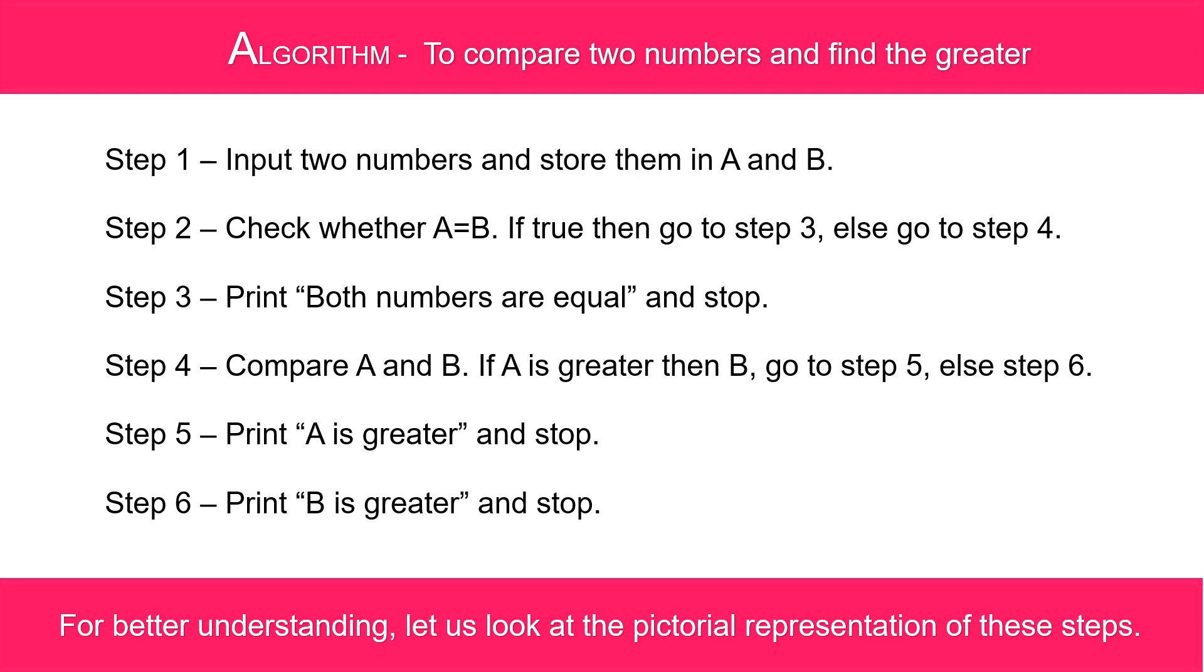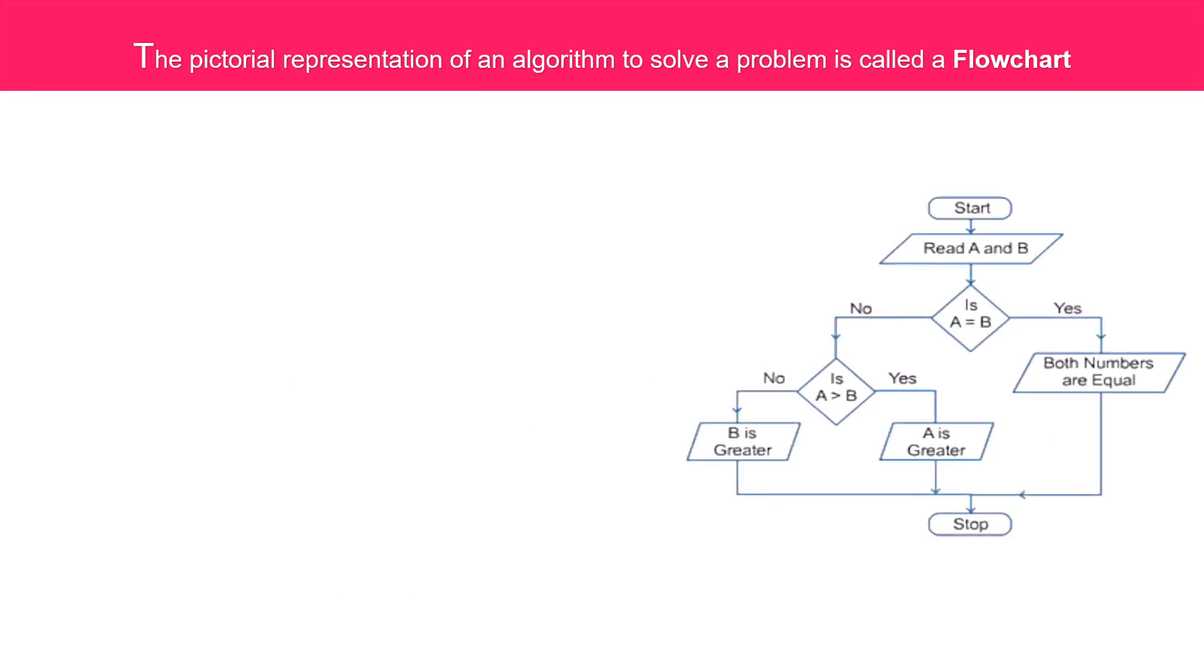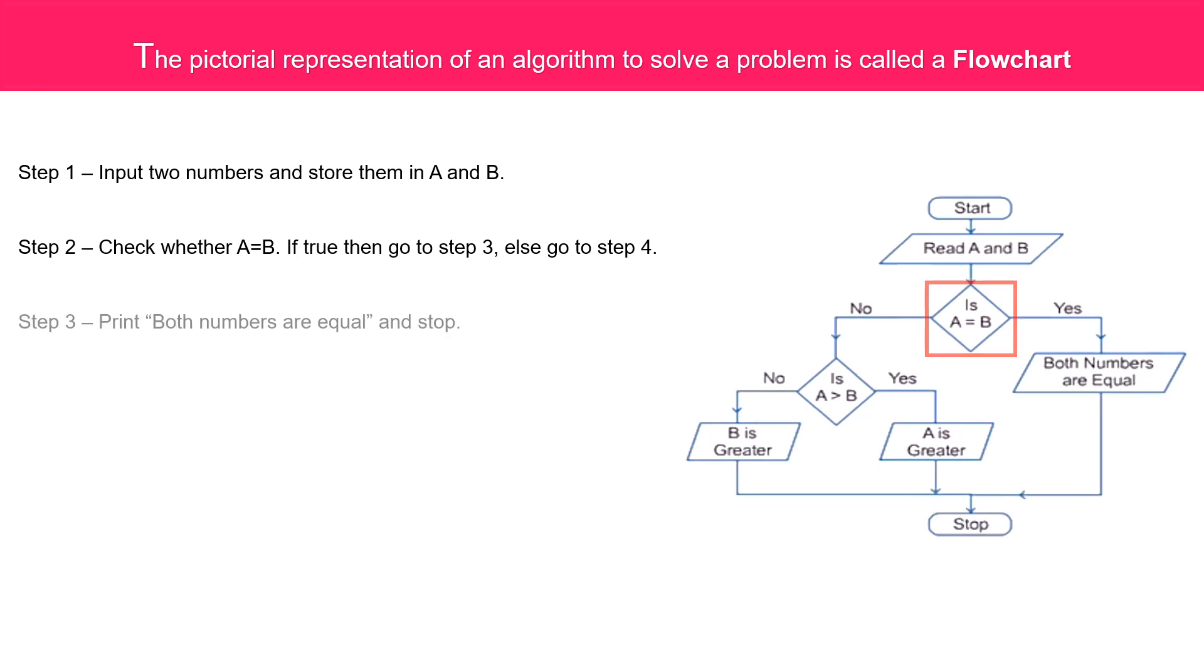For better understanding, let's look at the pictorial representation of these steps. Please look at the flowchart. Let's begin: input two numbers and store them in A and B. Step 2: check whether A is equal to B or not. If true, print both numbers are equal and stop.